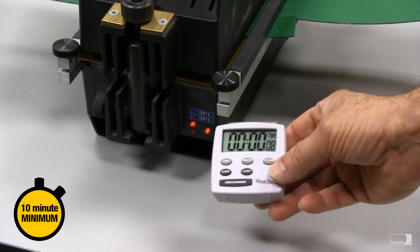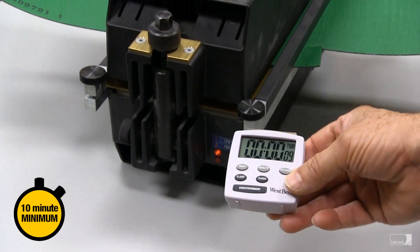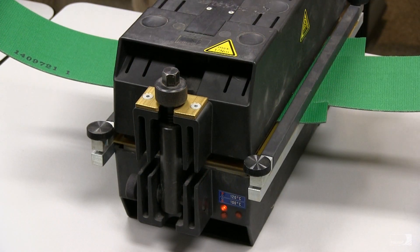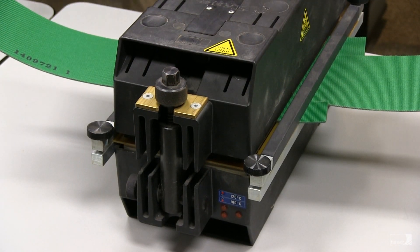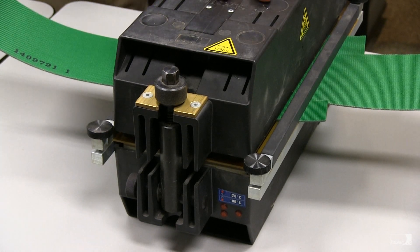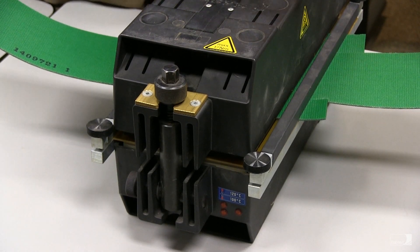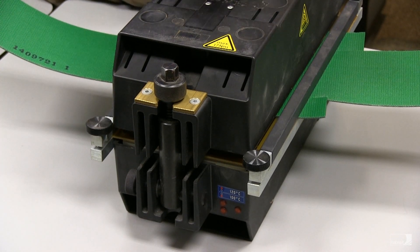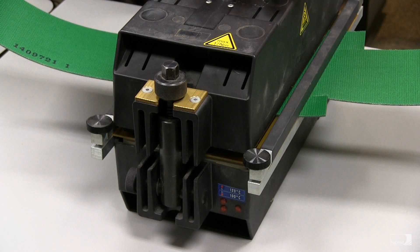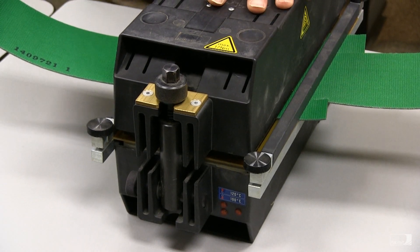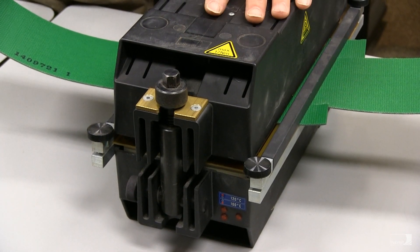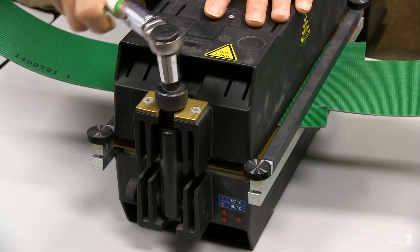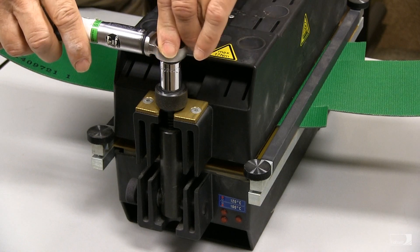So now our timer has clicked down to zero so we can turn it off and remove the belt from the press. Alternatively, you could unplug the press and let the belt cool down in the press. And that's a good practice, especially for demanding applications. But it may be that you need to go ahead and start the next belt in the press. So it's not necessary to cool the belt under pressure. The only thing to keep in mind is you shouldn't apply any tension to the belt if you were installing it on a machine until the belt is completely cooled back to room temperature.